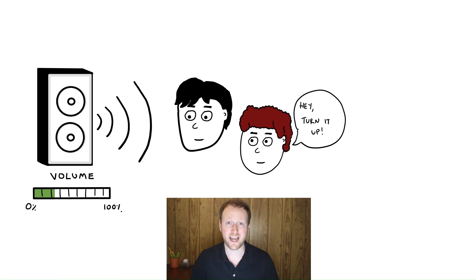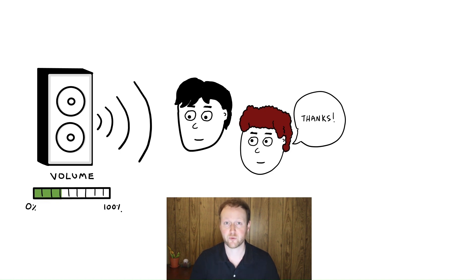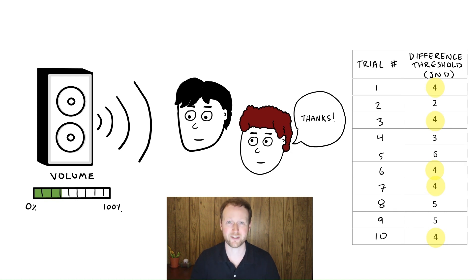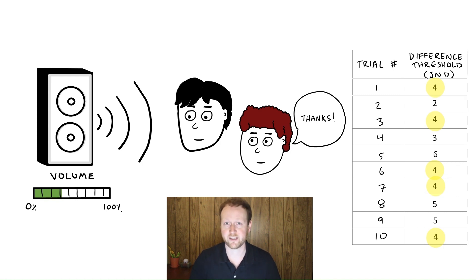We define a difference threshold as the smallest amount of change that is required to be reliably detected. Basically, how much do I need to increase or decrease a stimulus before an actual change is detected? As with absolute thresholds, the difference threshold is going to vary from situation to situation and between people. Formally, we define the difference threshold as the minimum amount of change required to detect a difference in stimulus intensity reliably 50% of the time. This minimum amount of change required to actually detect a change in stimulus intensity we call the just noticeable difference, or JND.